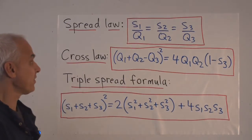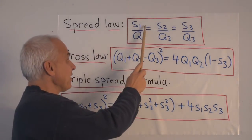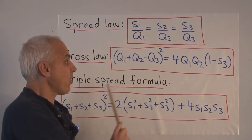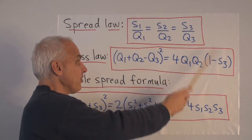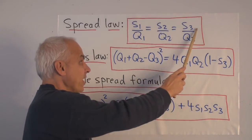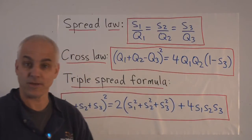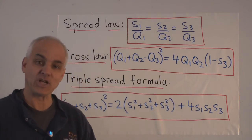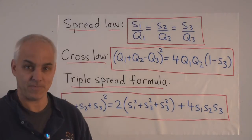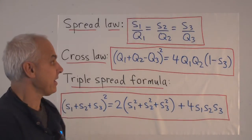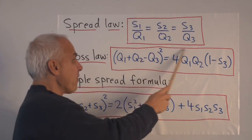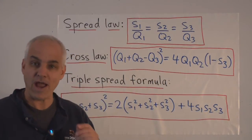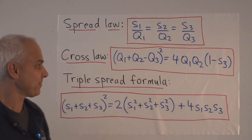The first law is the spread law: s1/q1 = s2/q2 = s3/q3. This is the rational analog of the sine law. It does not require any transcendental functions — only rational arithmetic is required.